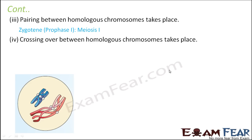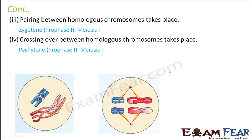Crossing over between homologous chromosomes also takes place in prophase 1 — specifically in the pachytene stage. In zygotene, homologous chromosomes pair up; the next stage, pachytene, means 'thick threads,' and crossing over happens in the tetrads during this stage. After pachytene comes the stage where they align at the equator. The crossing over results in exchange of chromosomal segments, observable in the paired chromosomes.